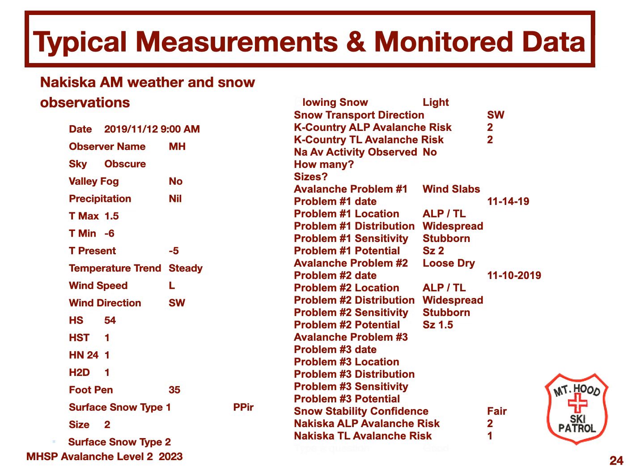This is an example of telemetry data and the resulting avalanche forecast data. The column on the left is measured data from telemetry stations for the most part, and the column on the right is the forecast data created by the avalanche forecaster.